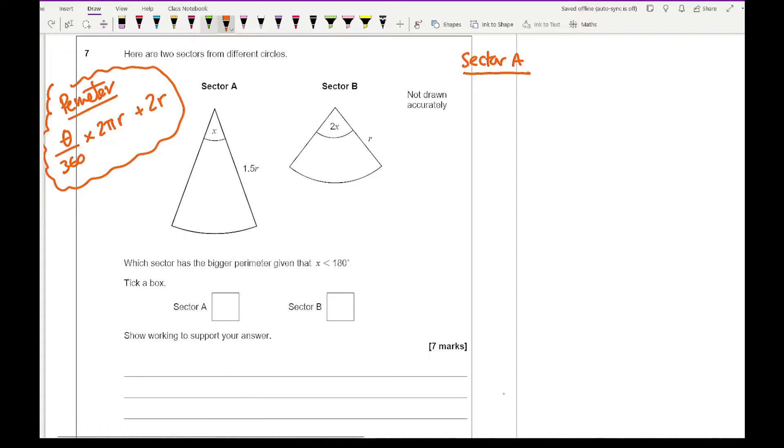Working out sector A, I know that the angle is x and I'm dividing that by 360. I'm going to multiply that by 2 times pi, and the radius for this is 1.5r. Then I'm going to add 2 lots of the radius, which is going to be 3r.